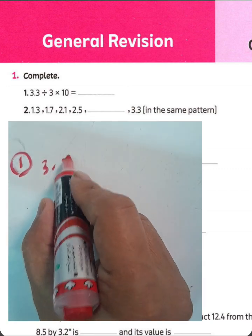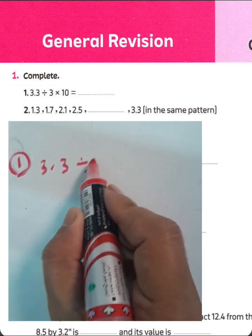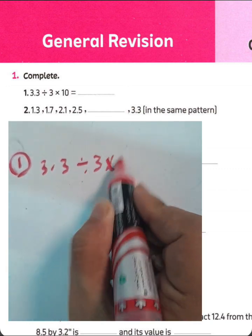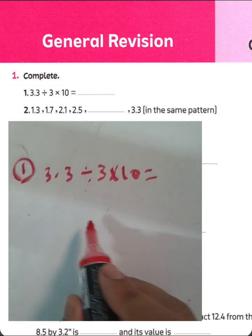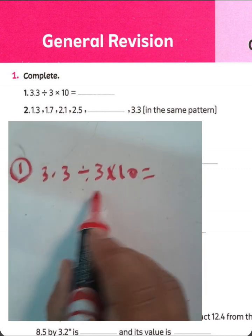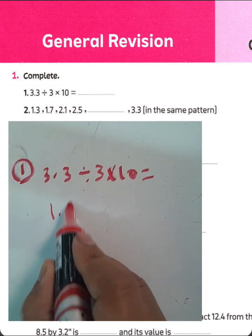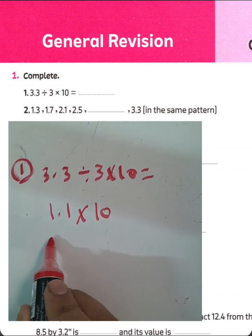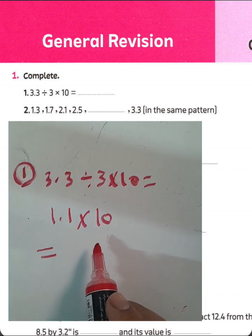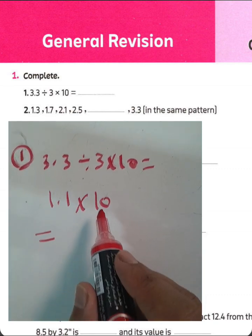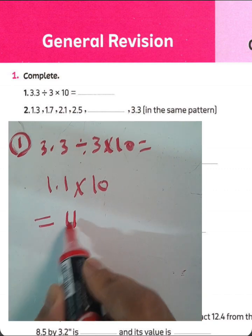We have 3.3 divided by 3 multiplication by 10. The first operation here is division. 3.3 divided by 3 equals 1.1, multiplication by 10. We must move the point to the right-hand side by one digit. Then the result will be 11.